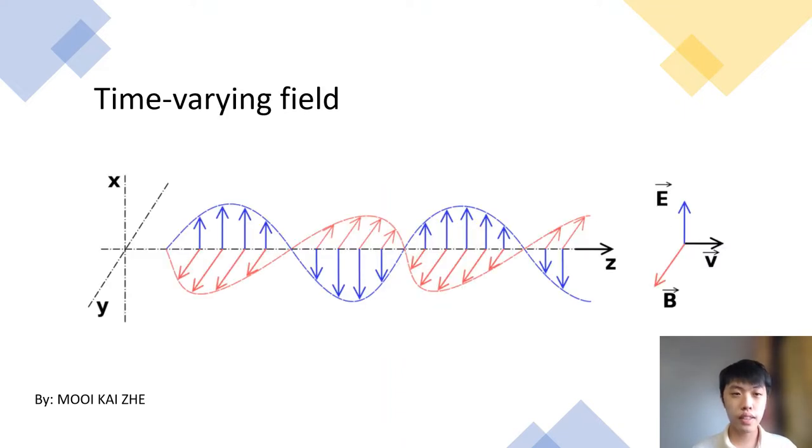In static electromagnetic fields, electric and magnetic fields are independent of each other. Whereas in dynamic electromagnetic fields, the two fields are interdependent. In other words, a time varying electric field necessarily involves a corresponding time varying magnetic field. One can affect each other, and today our main focus will be on time varying field.